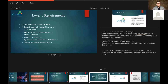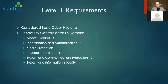Level one requirement is considered basic cyber hygiene. None of these controls are too in-depth and a majority of them are already included in the DFARS rule that companies have already stated they're implementing. There are 17 security controls across six different domains: access control has four practices, identification and authentication has two, media protection has one, physical protection has four, system and communication protection has two, and system and information integrity has four — totaling 17 practices.